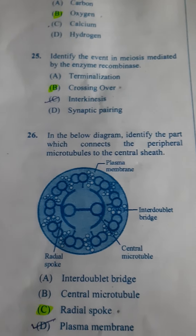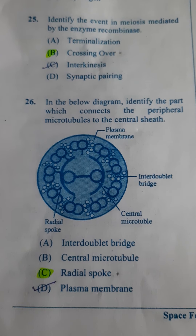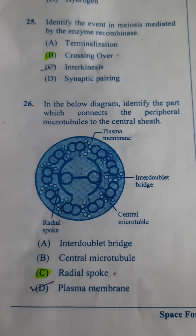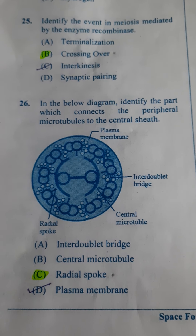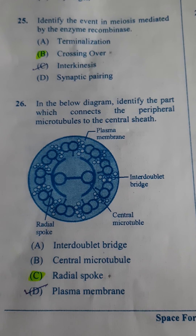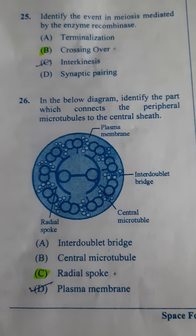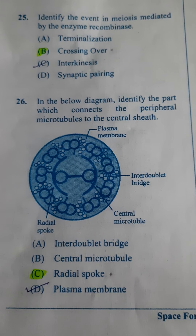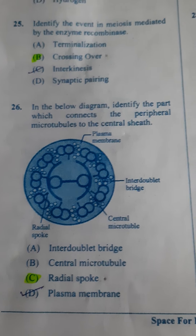Next: In the diagram, identify the part which connects the peripheral microtubule to the central sheath. These peripheral microtubules are connected to the central sheath with the help of the radial spoke. So the answer here is C.